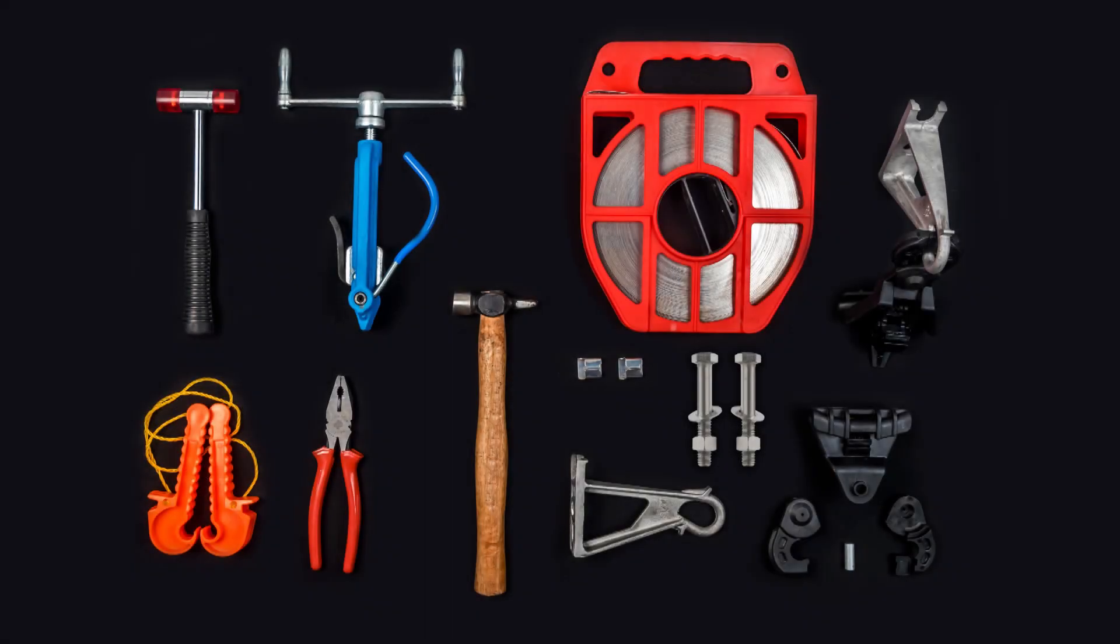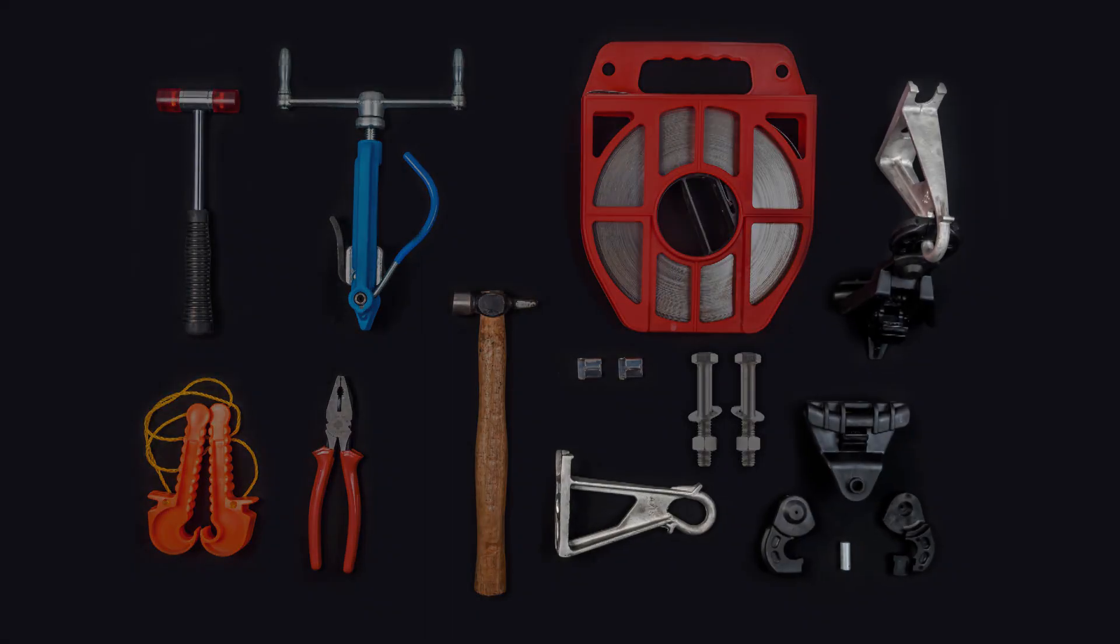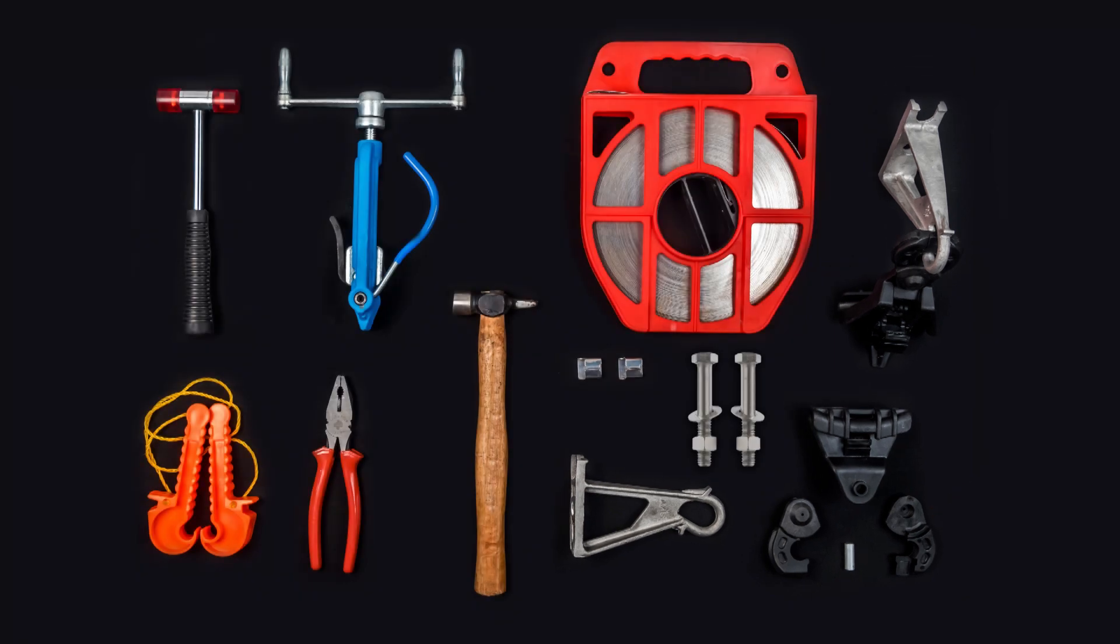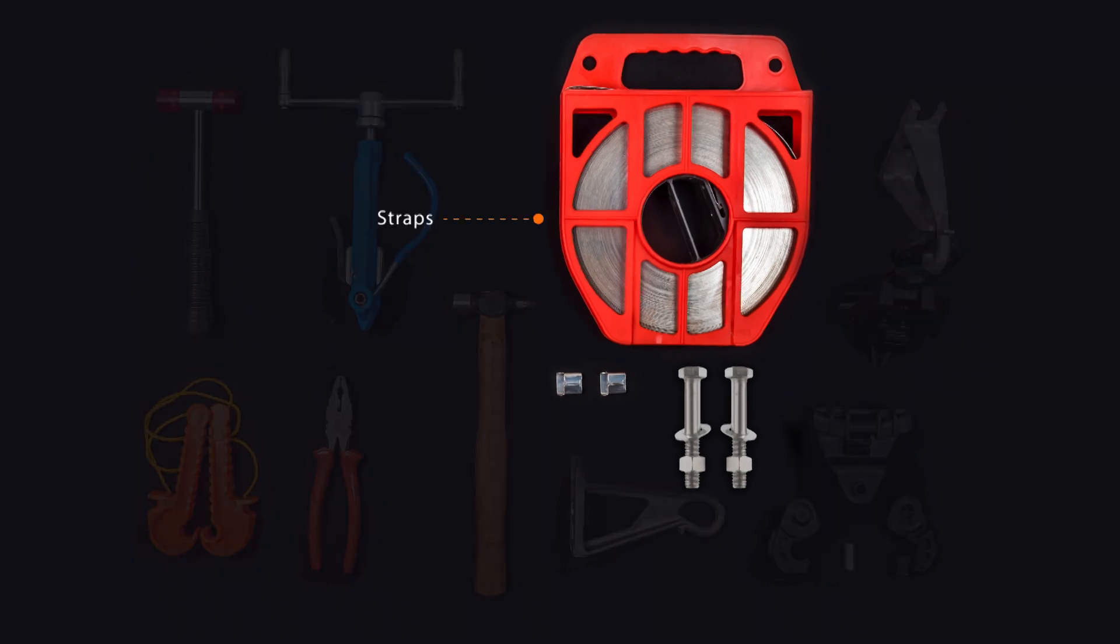The suspension clamp assembly consists of the clamp body, movable link, and the bracket. The accessories required to mount this assembly on a pole are straps and buckles, bolts and nuts.